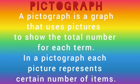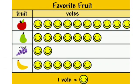Now let's understand what do we mean by a pictograph. A pictograph, as the name suggests, is a graph that uses pictures to show the total number for each term. In a pictograph, each picture represents a certain number of items. Over here we have to find out which is the favorite fruit of the children. Here one smiley represents one vote. As we can see through the pictures, an apple is liked by the most and grapes are liked by the least number of students.